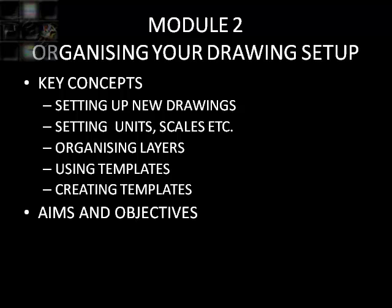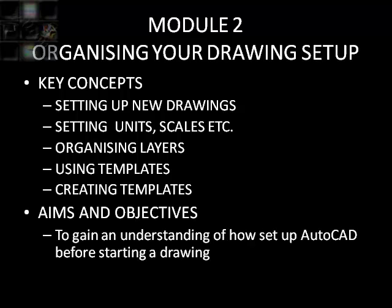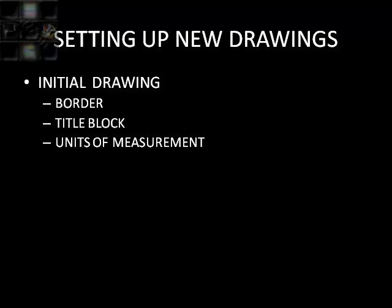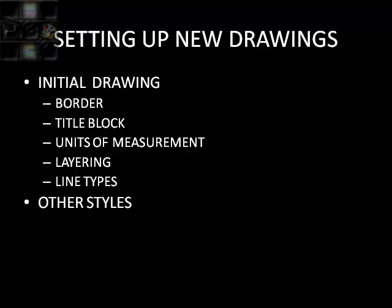The aims and objectives are to gain an understanding of how to set up AutoCAD before starting a drawing. An initial drawing setup includes a border, title block, units of measurement, layering and line types. Equally important are the styles used for dimensioning, hatching and text.